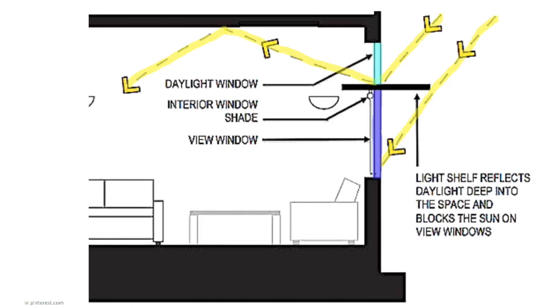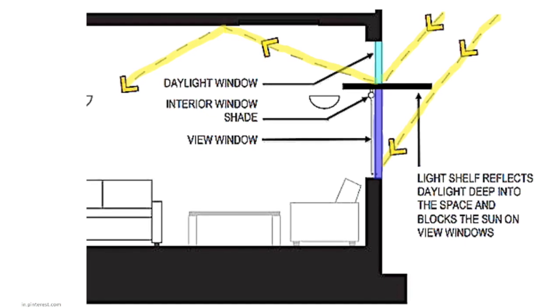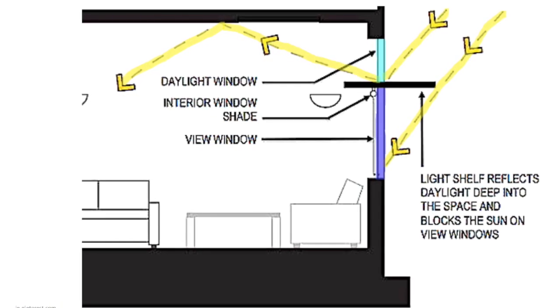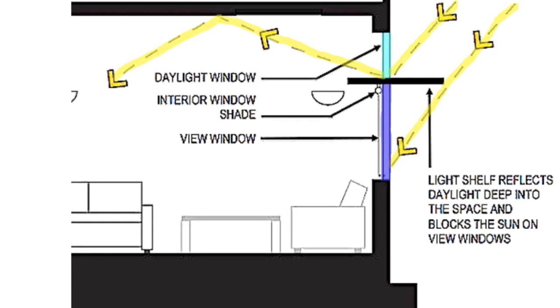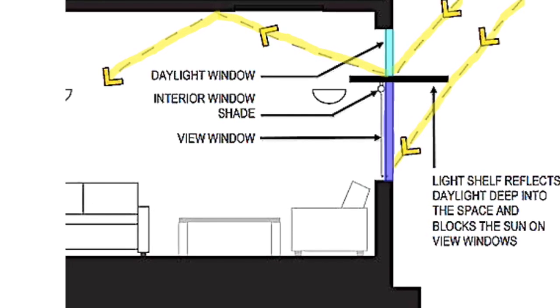Not only do light shelves allow light to penetrate through the building, but they are also designed to shade near the windows. Due to the overhangs of the shelves, they help reduce window glare.